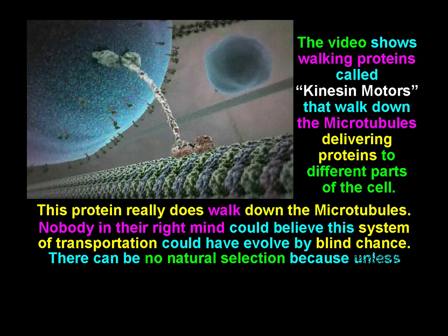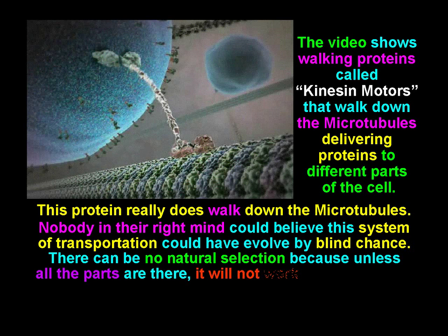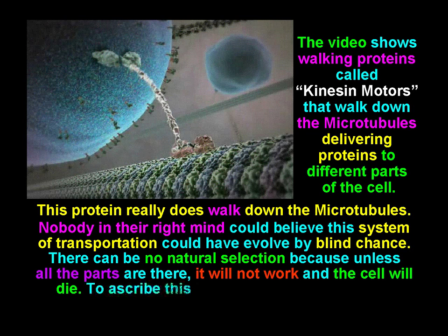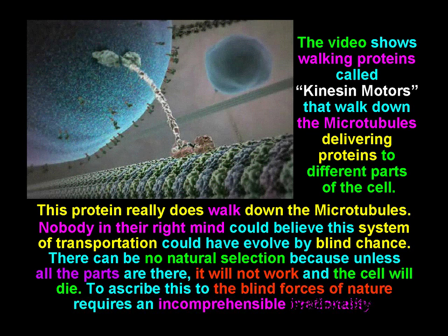There can be no natural selection, because unless all the parts are there, it will not work and the cell will die. To ascribe this structure to the random movement of molecules requires an incomprehensible, irrational leap of faith.